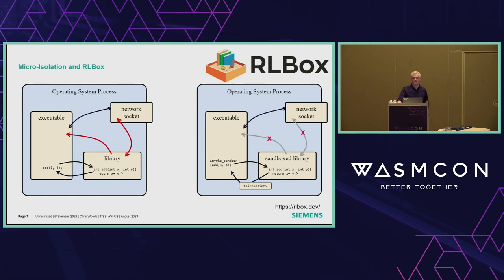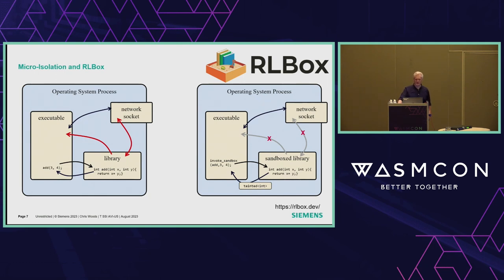So how do we solve this without the component model? RLBox takes your library, compiles it to WebAssembly, and in doing so ensures all memory accesses use the linear memory provided. This translation enforces sandboxing. It's then translated again with wasm2c back to C and compiled back to native, which restores some of the performance hit. The WebAssembly module now only has access to the memory you give it and the functions you allow it to call — this is what we refer to as micro-isolation.